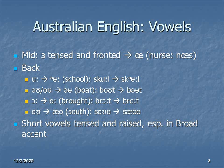Moving further down still, the /ɔː/ vowel is raised and rounded a bit, so BROUGHT becomes BROGHT. And to round things out, the /aʊ/ diphthong moves further up, becoming /æɔ/, so the word SOUTH becomes SÆƆTH.